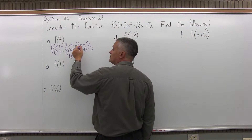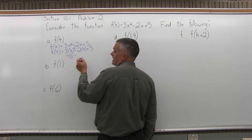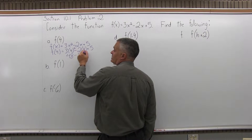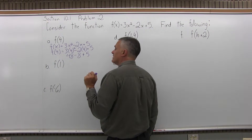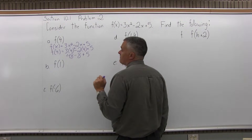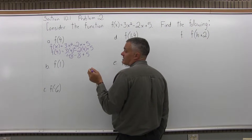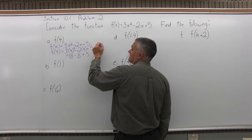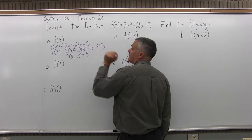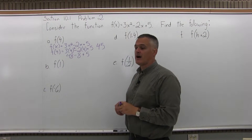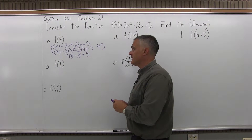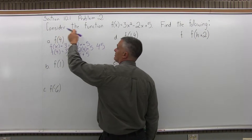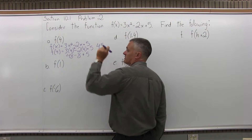Then minus 2 times 4 is minus 8, then plus 5 at the end. So 48 minus 8 is 40 plus 5 more. The answer is 45 for part a — f of 4 is 45. That means for that function, if you put in a 4 as an input, the output you get is 45.